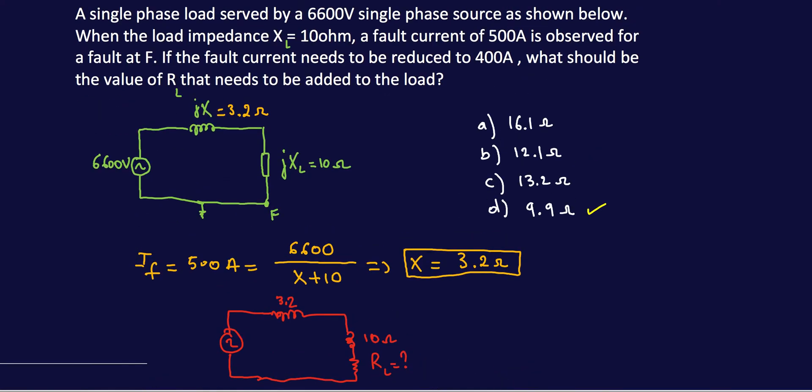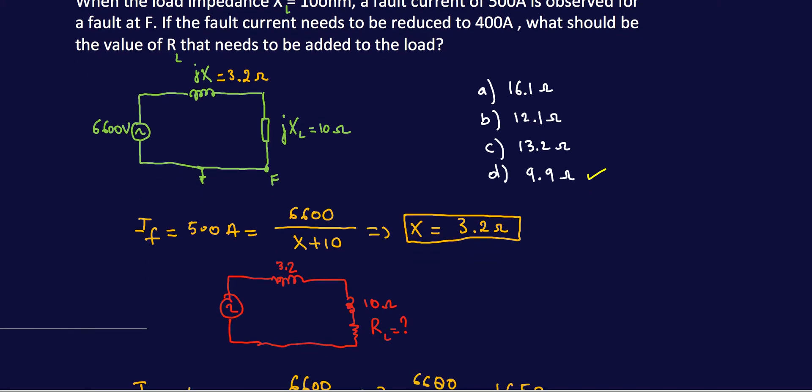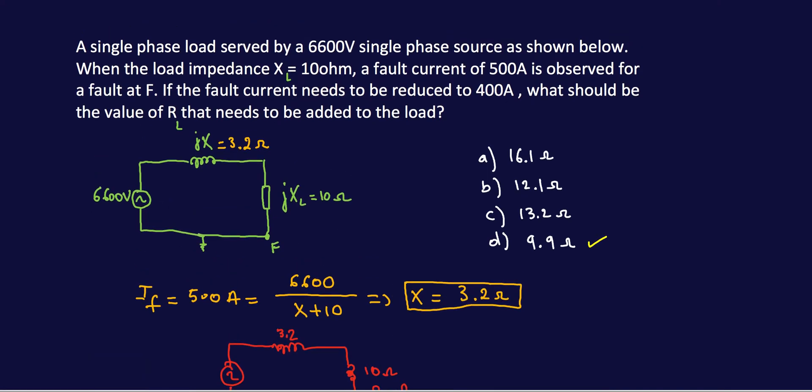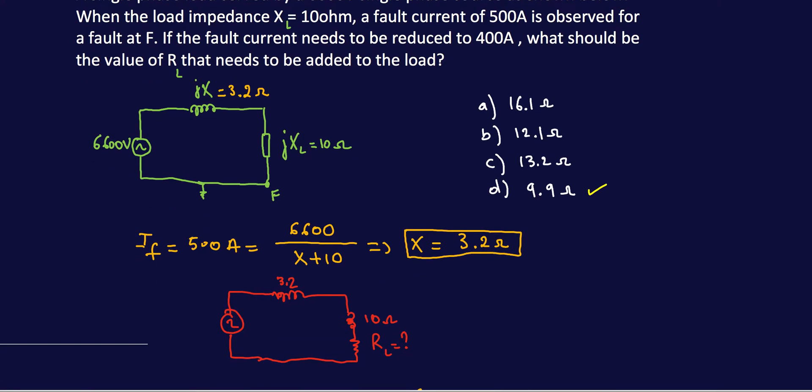However, if I don't go any further, remember the question is what should be the value of RL that needs to be added to the load. Let's say I already solved for fault current being equal to 500 amps and I got 3.2. I already have 10 ohms which was given to me. If I'm not paying attention and I do 10 plus 3.2, that's 13.2, and if you notice that's part of our answer over here.